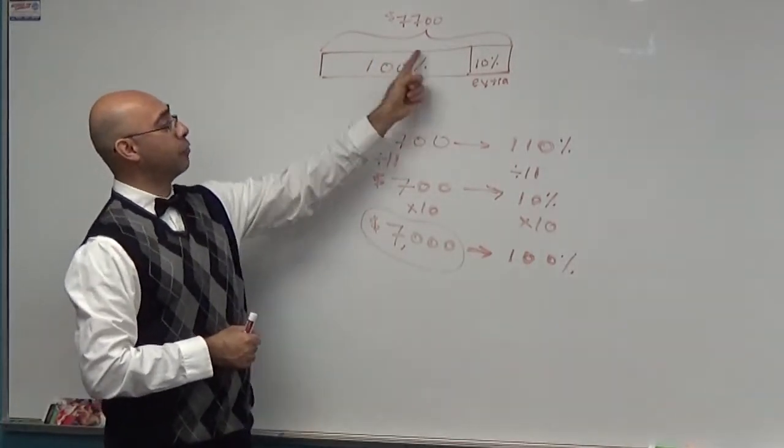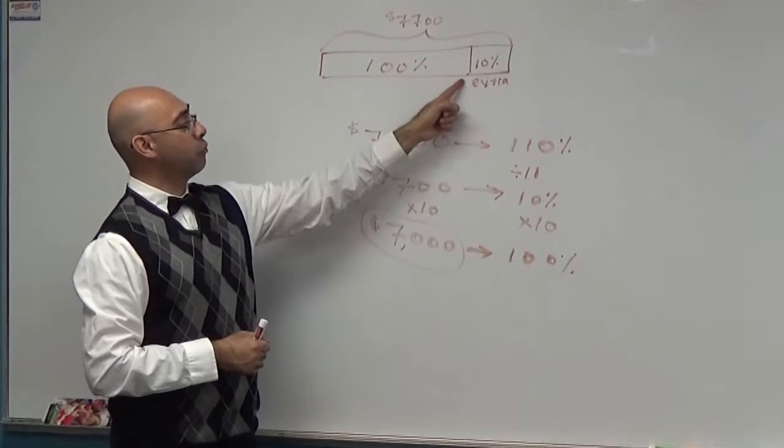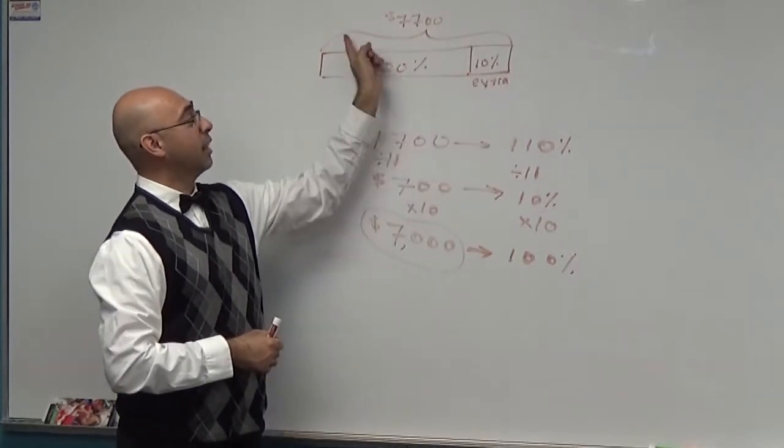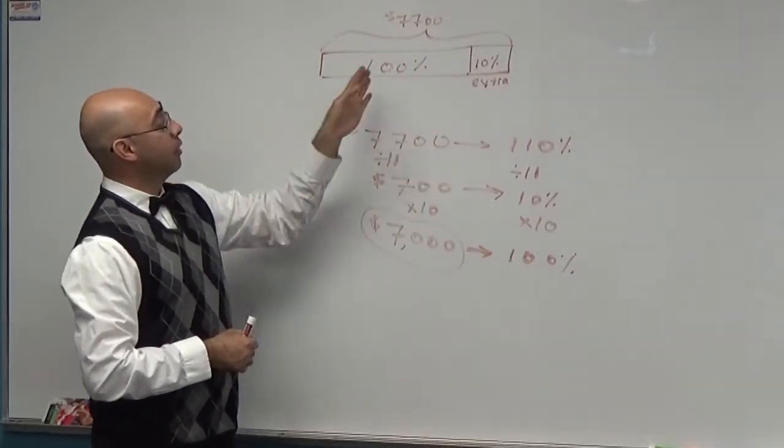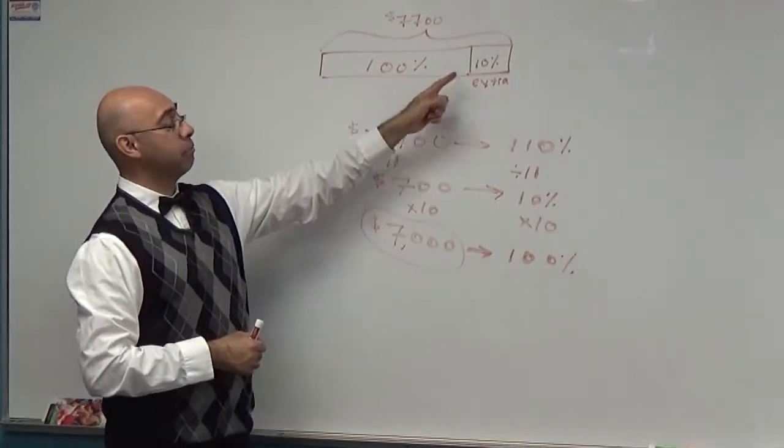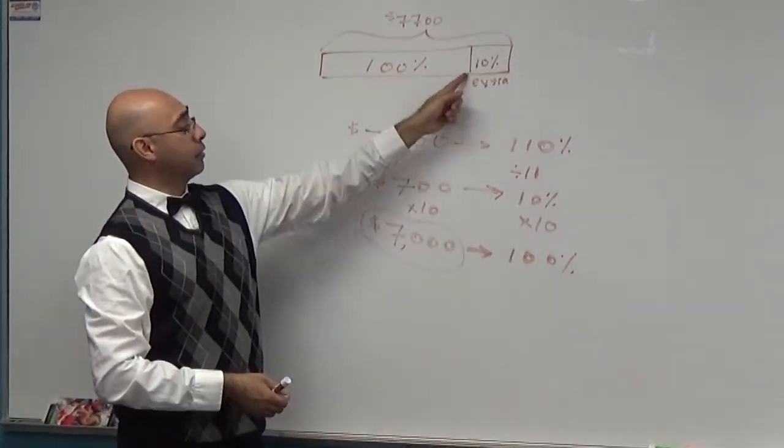Look at the picture and say, what does this show me? It shows $7,700 is after the year. This is how much he had before. This is how much extra. Now he has 7,700. That means the whole thing must be 110%.